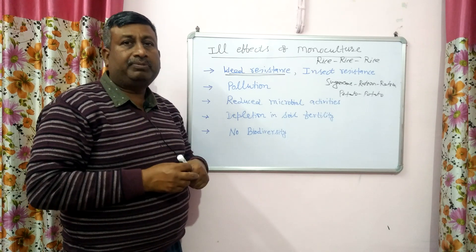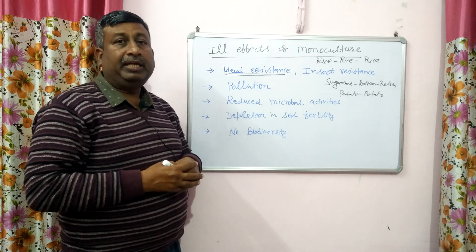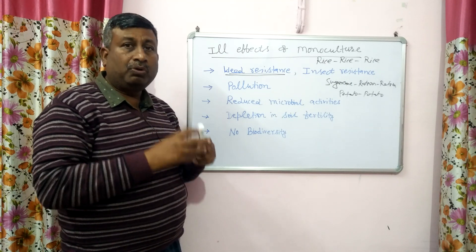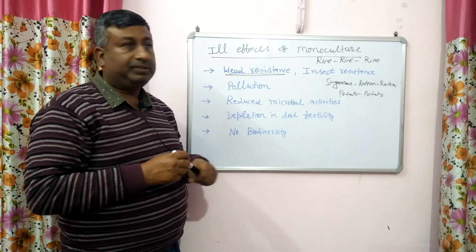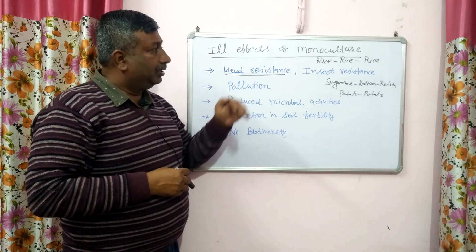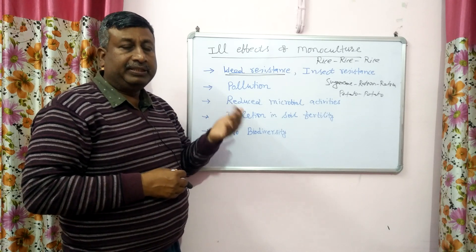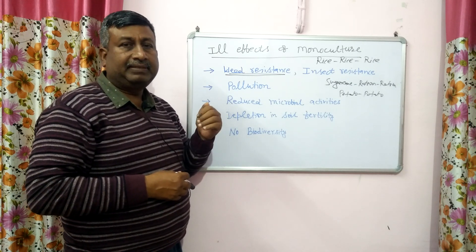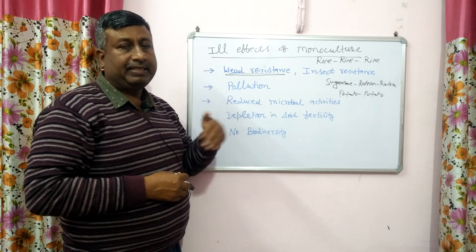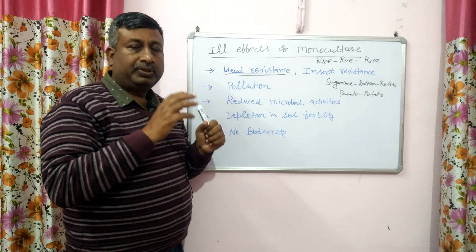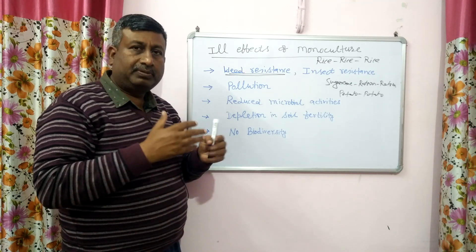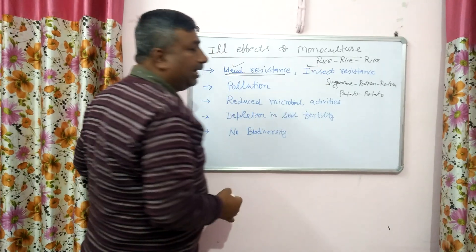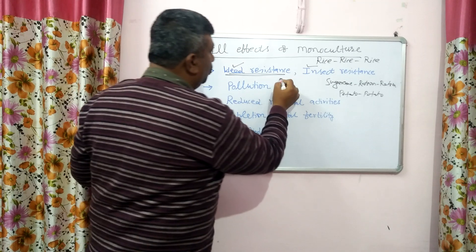Once weeds develop resistance, their population increases, and we have to apply more and more chemicals — a higher dose of herbicides. That's why in monoculture, the chemical dose increases. The same mechanism applies to insect resistance. To control insects, we apply insecticide, but in each season the insect is there and we have to apply insecticide again. So the dose increases, insects are not controlled, and they develop resistance. There is a continuous problem of weeds and insects, and we have to apply more dose of chemicals.